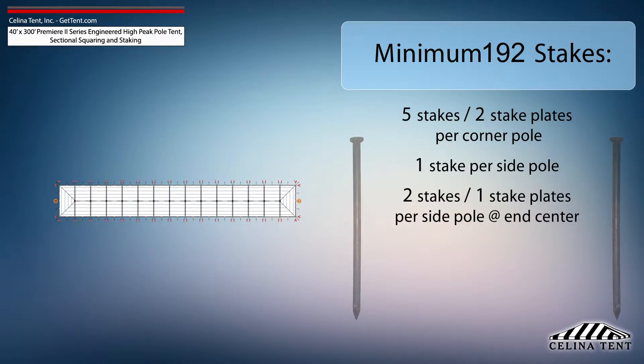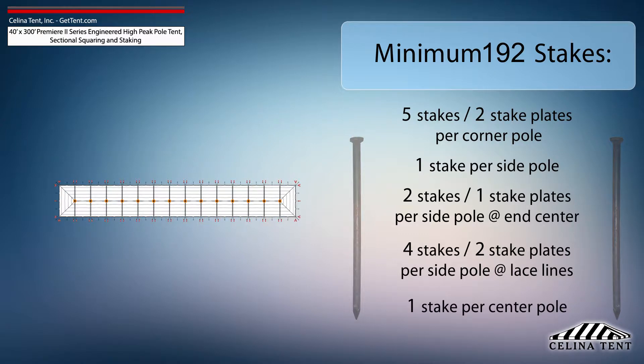2 stakes and 1 stake plate for the side pole at the center of each end, 4 stakes and 2 stake plates for each side pole at lace line locations, and 1 stake for each center pole.